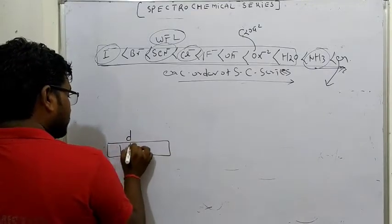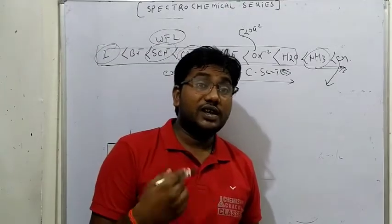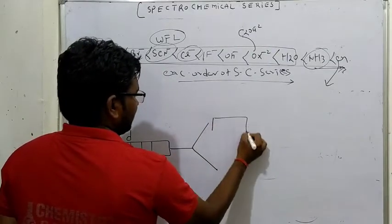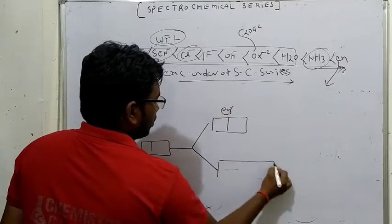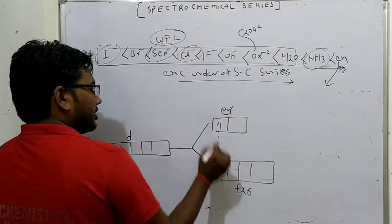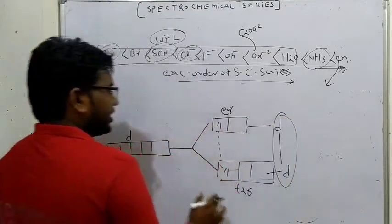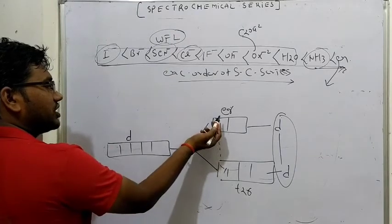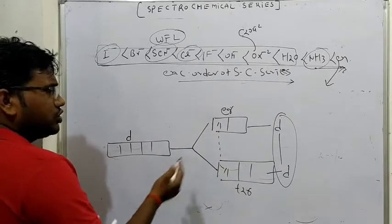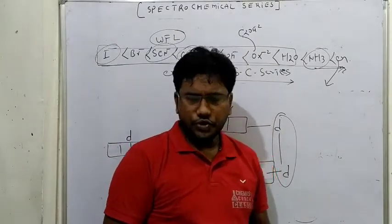D orbital transition elements के पास होता है और उनके पास color की property होती है, color lines show करते हैं। Low spin complex में जब unpaired electrons होते हैं वो ground state से excited state में चले जाते हैं - इसे हम कहते हैं D-D Transition। इसी concept की वजह से transition metals या complex ions color की property show करते हैं। यह पूछा जाता है कि color क्यों show करते हैं।